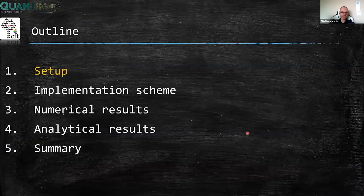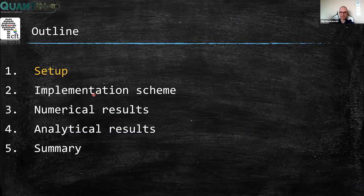Let me start with the outline. First, I will describe our setup — how we can implement general quantum measurements. Then I will explain a particular implementation scheme that we developed, and I will talk about its effectiveness based on numerical evidence and some analytical results. I will finish with a summary.